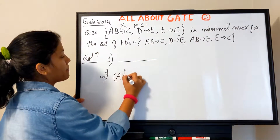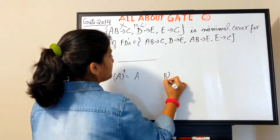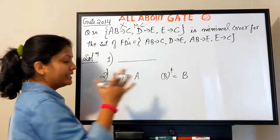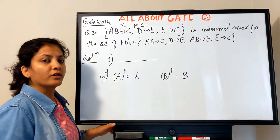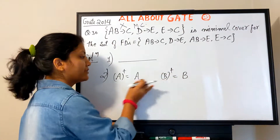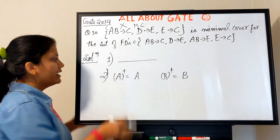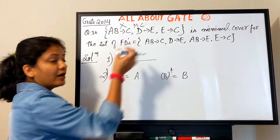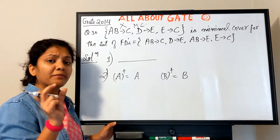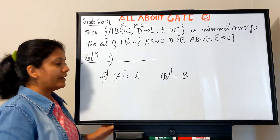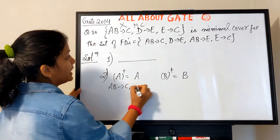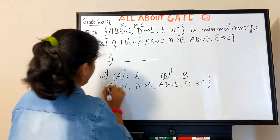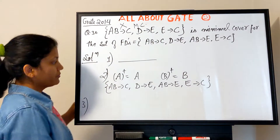This shows that it's not always necessary to break a group of LHS attributes apart — sometimes they must remain together because they cannot determine the target individually. So after step two, the set remains: AB→C, D→E, AB→E, E→C.